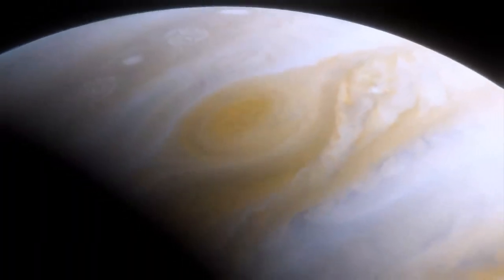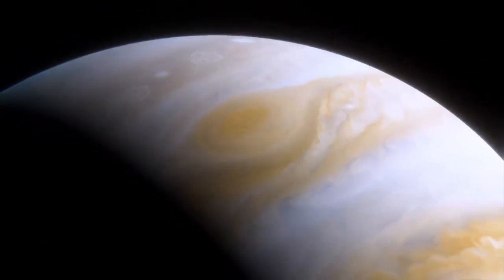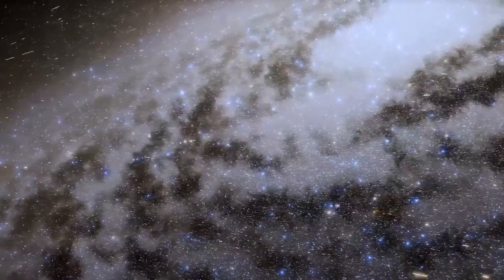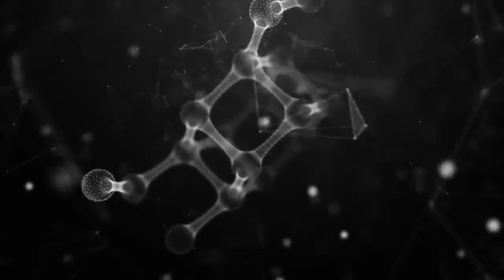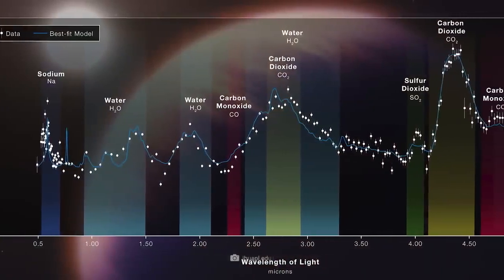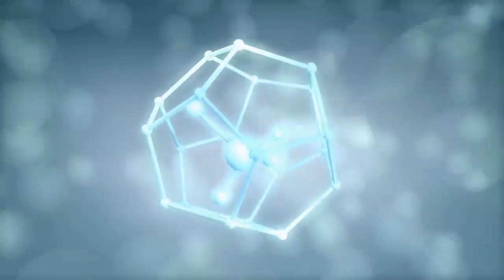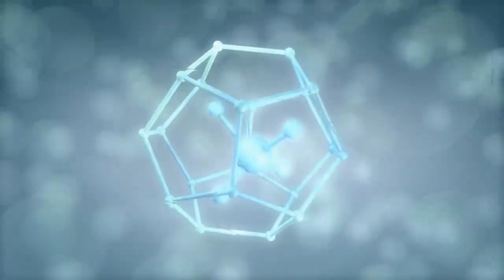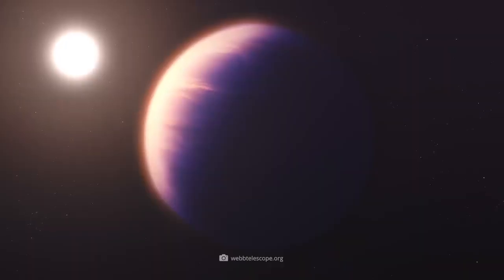Since this planetary colossus exceeds the size of the mighty Jupiter by a factor of 1.3, the decoding of its gas envelope proved to be particularly revealing. In addition to the previously recorded carbon dioxide and water deposits, Webb's instruments also revealed the presence of sodium, potassium and carbon monoxide. In the same breath, it was revealed that the planet's atmosphere does not appear to contain methane, a fact in which WASP-39b differs significantly from some of the gas giants in our home system.